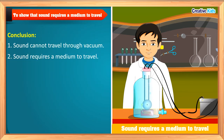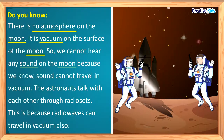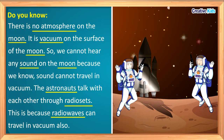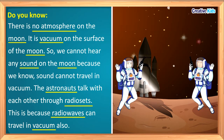We conclude from this activity that sound requires a medium to travel and it cannot travel in vacuum. There is no atmosphere on the moon — it means there is vacuum on the surface of the moon — so we cannot hear any sound on the moon. Therefore, astronauts talk with each other through radio sets, because radio waves can travel in vacuum also.